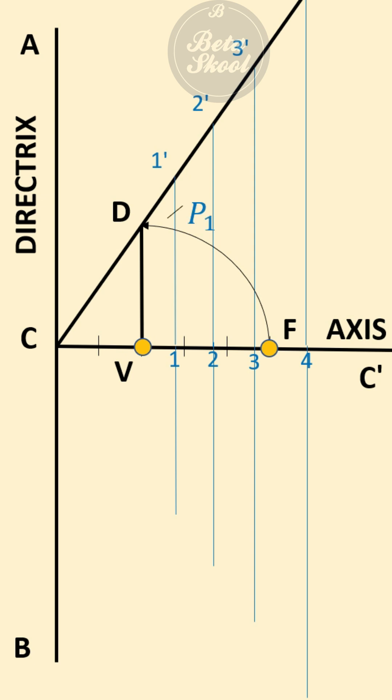Repeat the same procedure for the lines passing through point 3 and point 4 to get points P3 and P4. Similarly, repeat the same procedure in the downside so you'll get points P1', P2', P3', P4'.